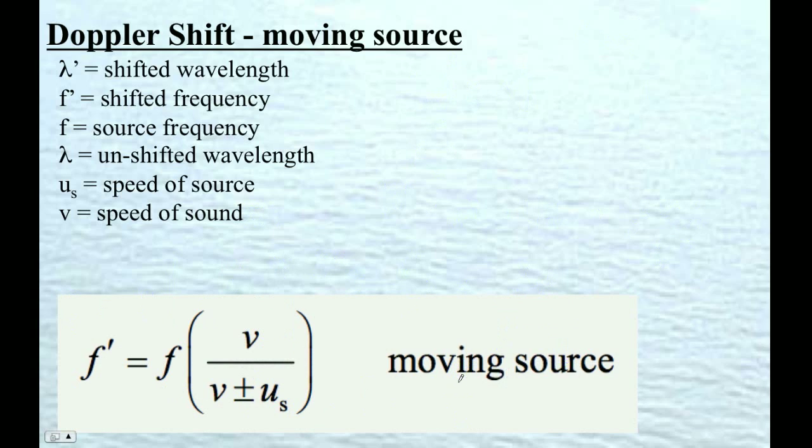If I hit this thing and erase all those things, there it is. That's what it looks like in the data packet. The s there goes with source. It's not the speed of sound. This is our 343 or whatever the speed of sound is. Here's our original frequency. Here's our shifted frequency. The new frequency is the f prime.